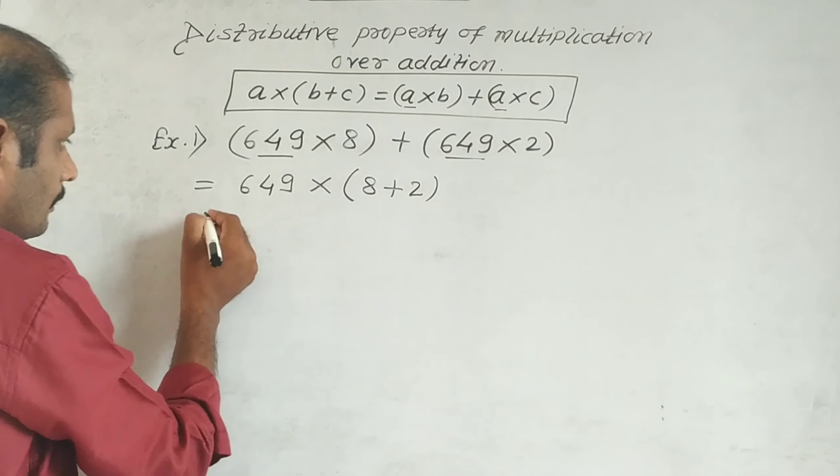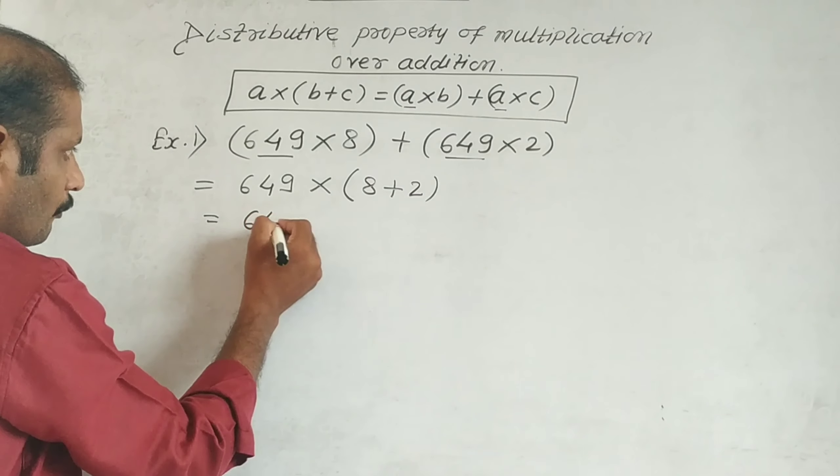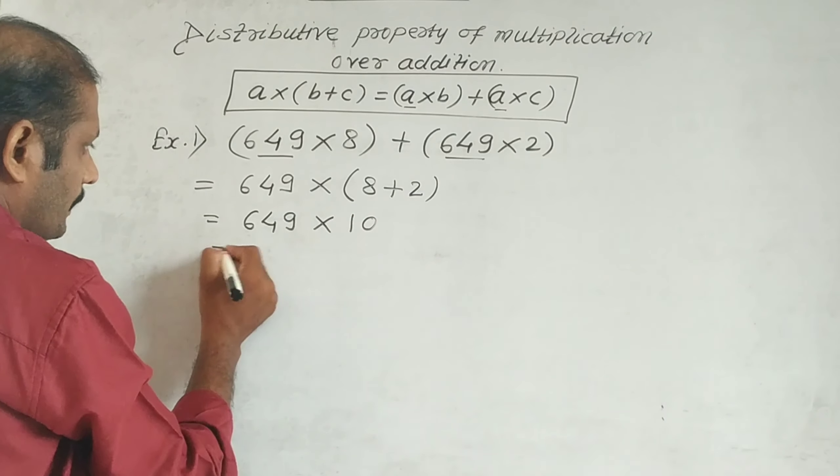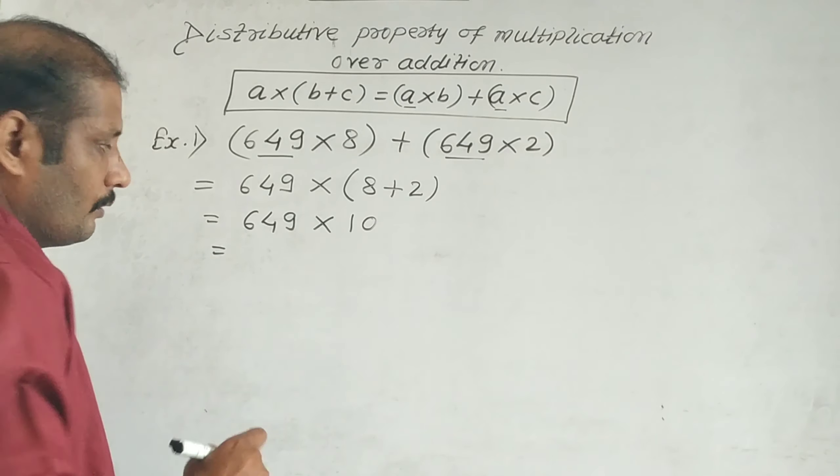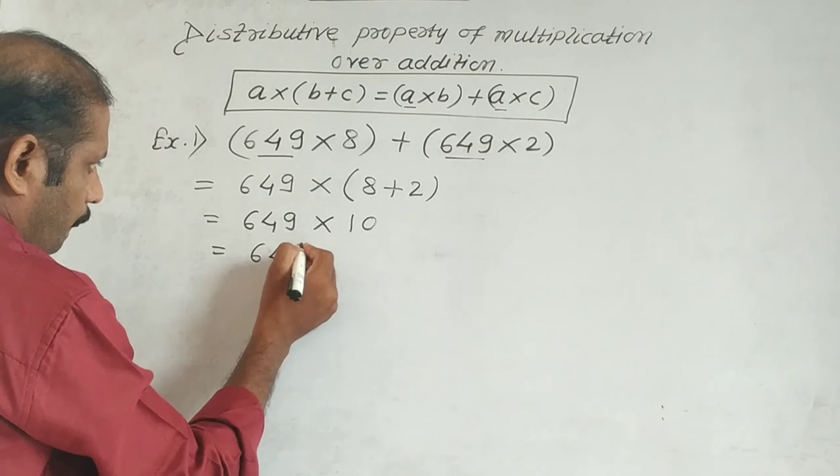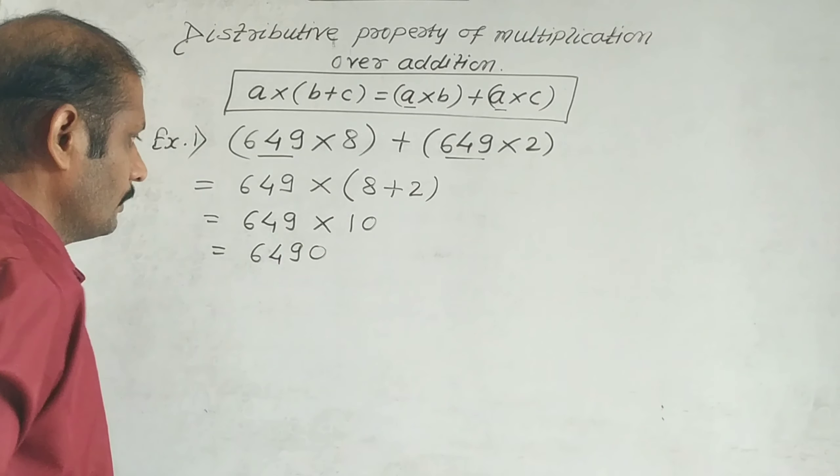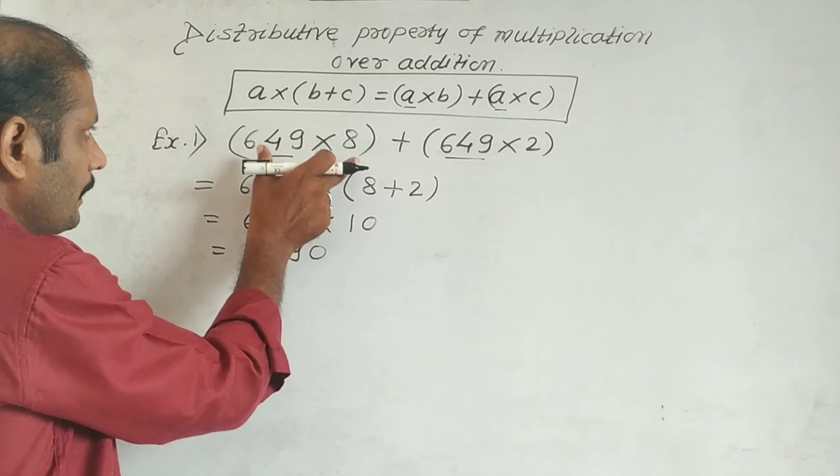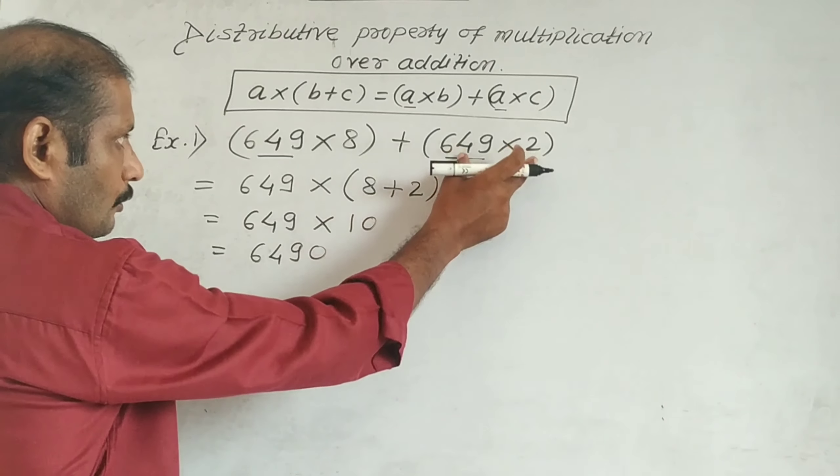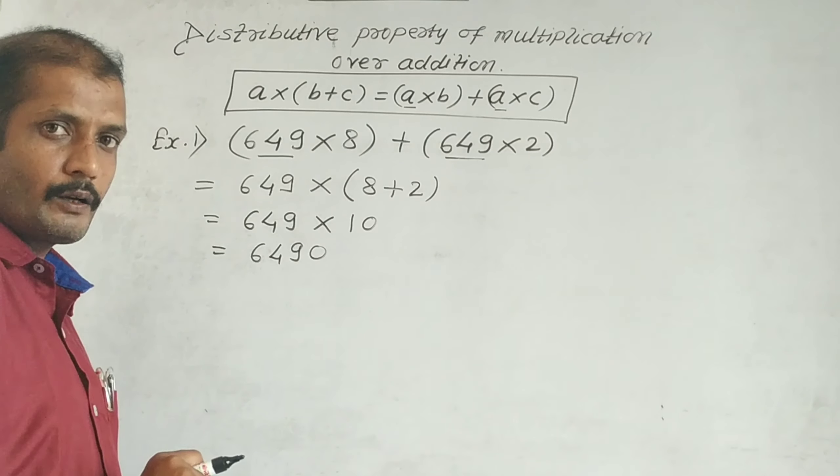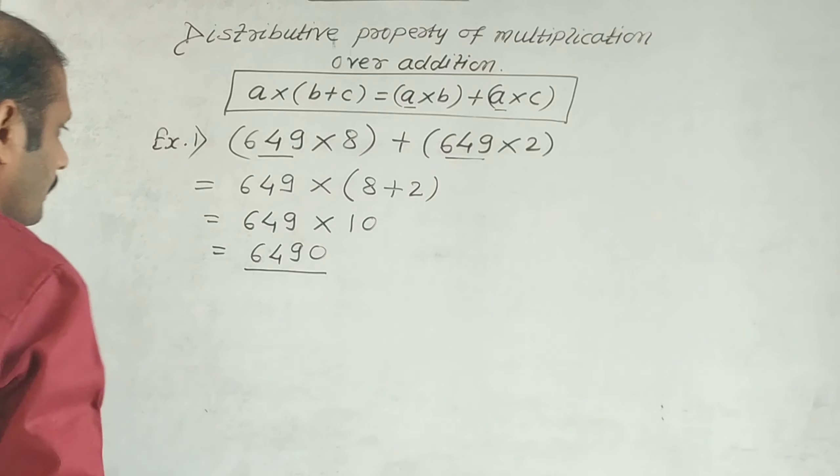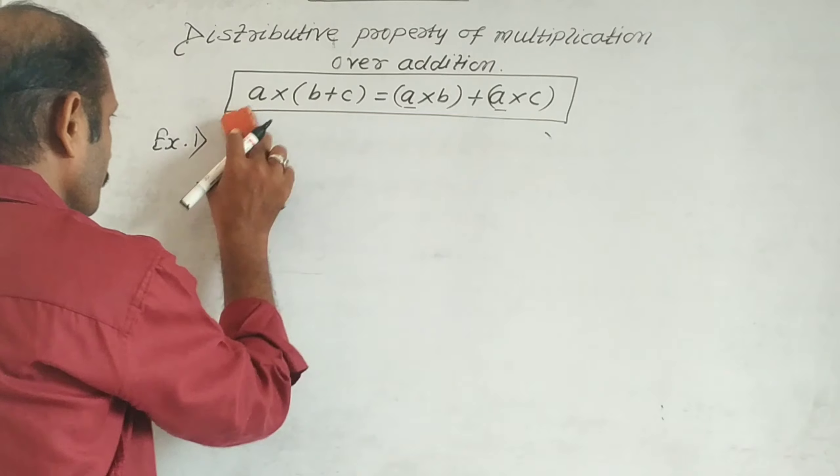This equals 649 × (8 + 2) = 649 × 10 = 6490. If you multiply both terms separately and then add them, you'll get the same answer. Next, let's see another example.